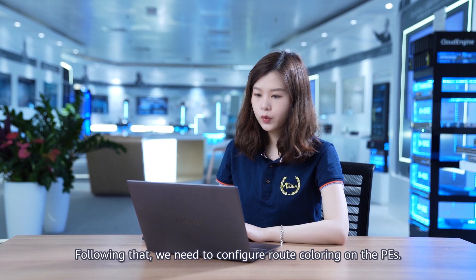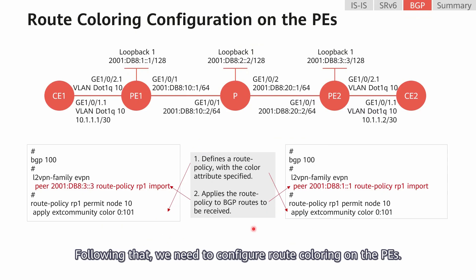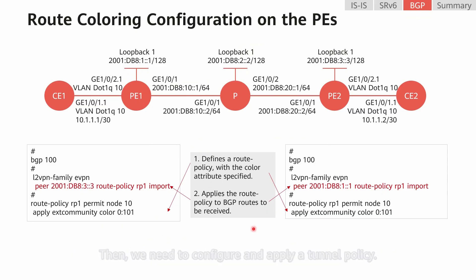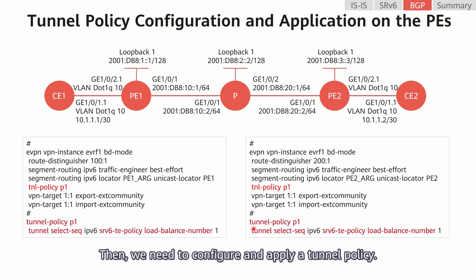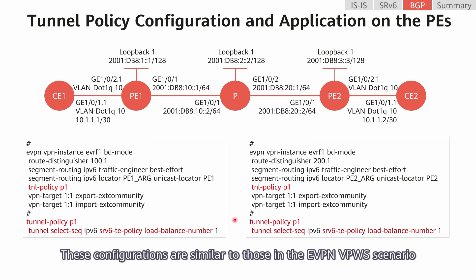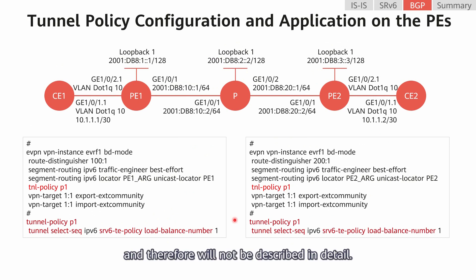Following that, we need to configure route coloring on the PEs. Then we need to configure and apply a tunnel policy. These configurations are similar to those in the EVPN VPWS scenario and therefore will not be described in detail.